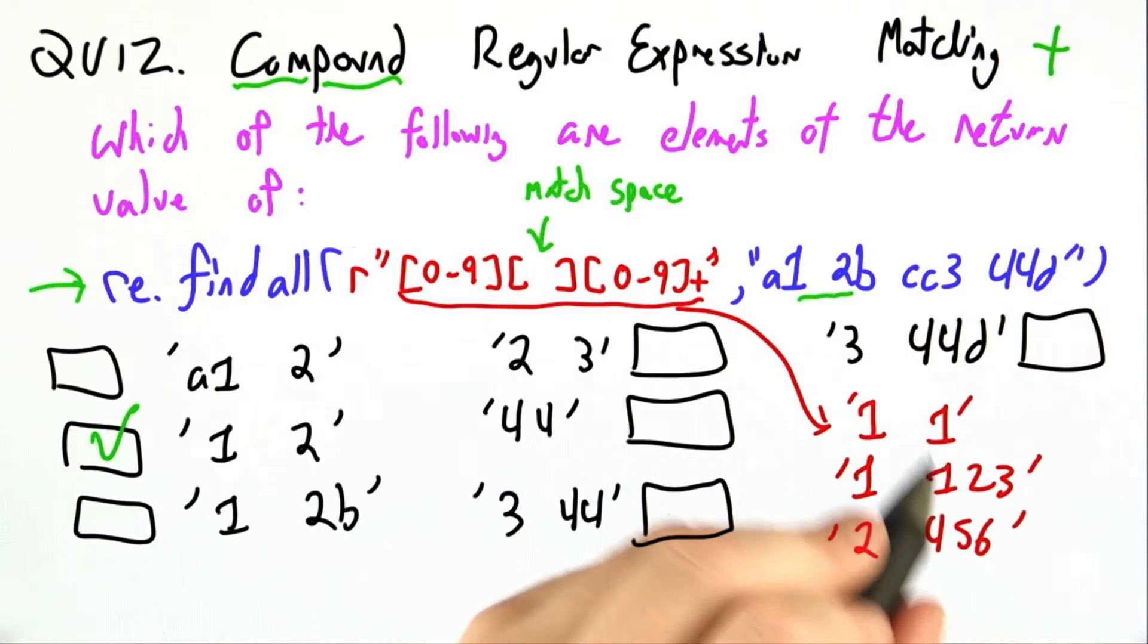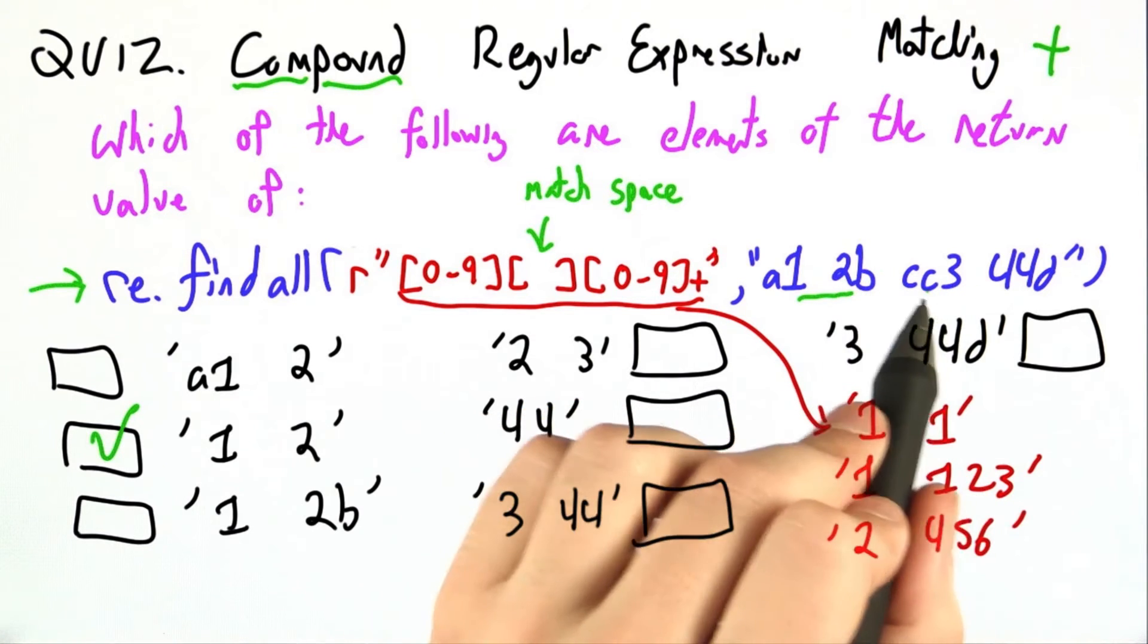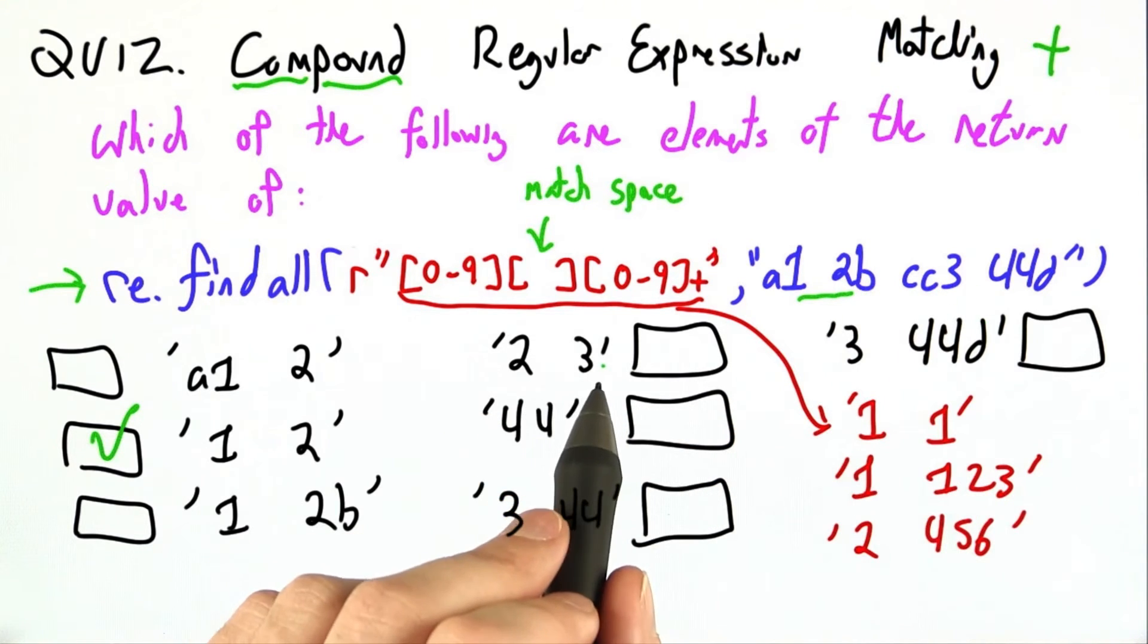2 space 3. This has the right format. It matches our regular expression, but it's not actually in the haystack string, so it can't be part of the return value.